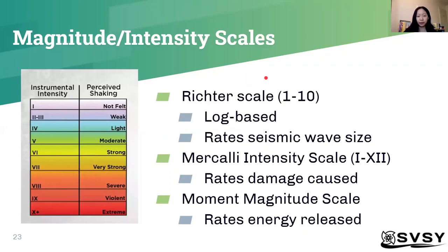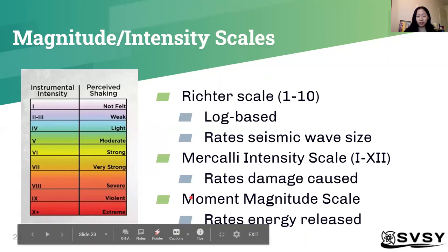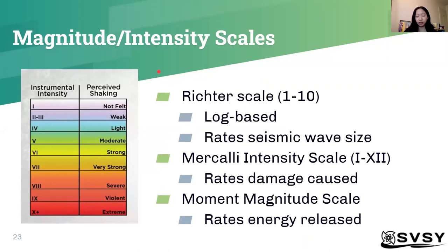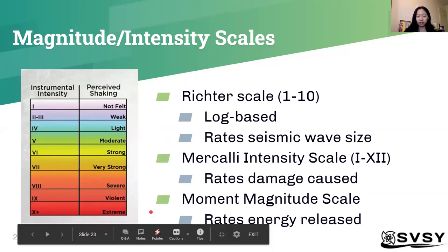The last topic is magnitude and intensity scales. Magnitude scales — the Richter scale and the moment magnitude scale — measure the amount of energy the earthquake releases. The intensity scale measures the actual shaking felt from the earthquake. The Richter scale goes from 1 through 10 and is log-based, meaning a magnitude 5 earthquake is 10 times stronger than a magnitude 4. It rates the size of the seismic waves and is the most famous scale. The other two scales are less well known but also used.